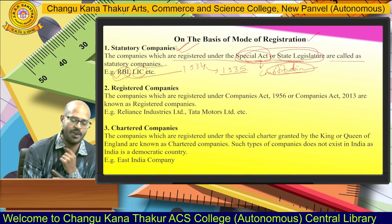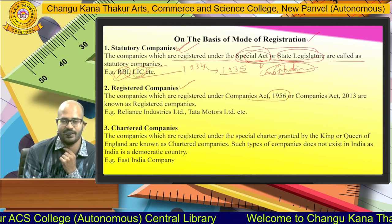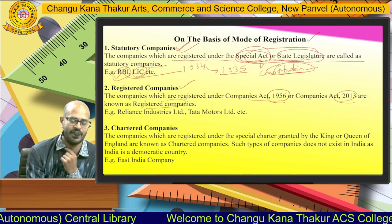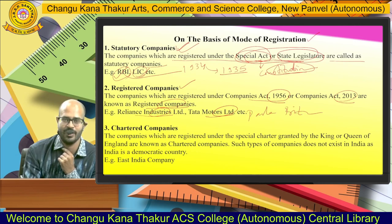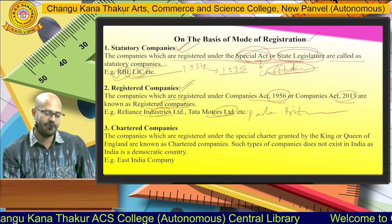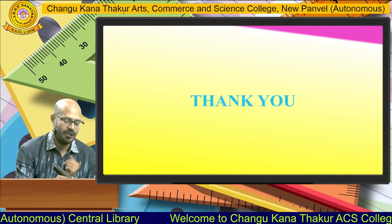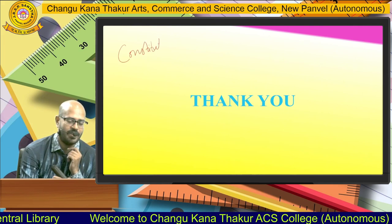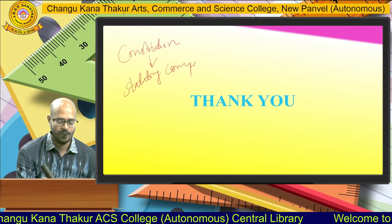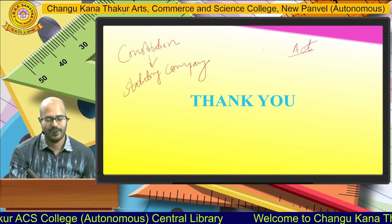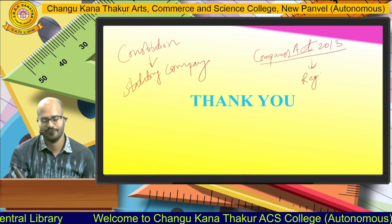The second type is registered companies — those companies which are registered under Companies Act 1956 or Companies Act 2013. Examples include Reliance Industries, Tata Motors, Parle, Britannia, and Hindustan Unilever. The difference between statutory and registered companies is that statutory companies are formed directly under the Constitution or special legislation, whereas registered companies are formed by registering under the Companies Act.